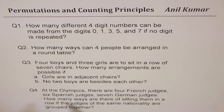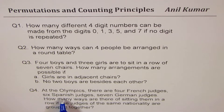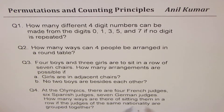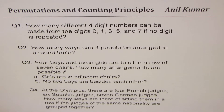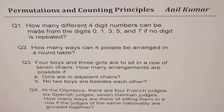Question number four: at the Olympics there are four French judges, six Spanish judges, and seven German judges. How many ways are there of sitting them in a row if judges of the same nationality are grouped together? So these are the four questions for you. You can always pause the video, answer these questions, and then look into my suggestions.